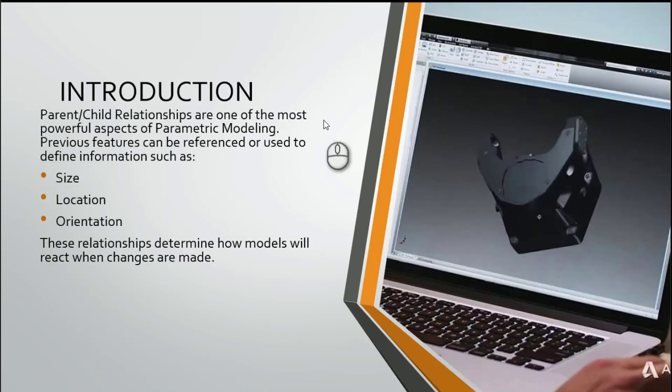First off, we're talking about parent-child relationships and it's one of the most powerful aspects of parametric modeling, basically because everything's interconnected and we can use that interconnected information to define things like size, location, and orientation. These relationships basically let us know how models are going to react.